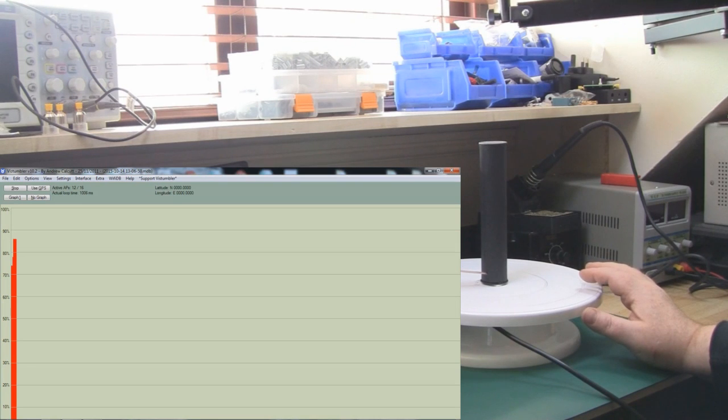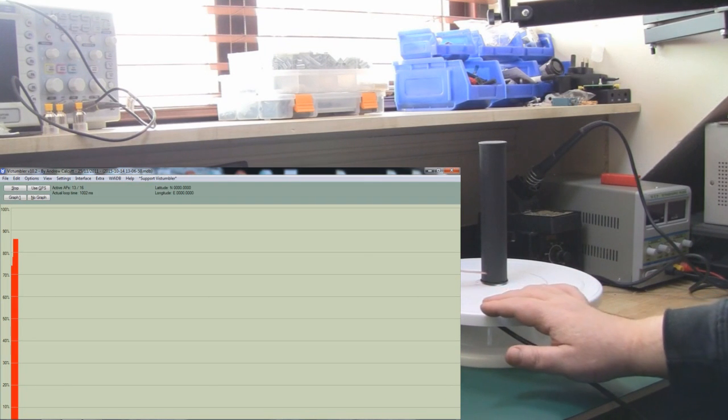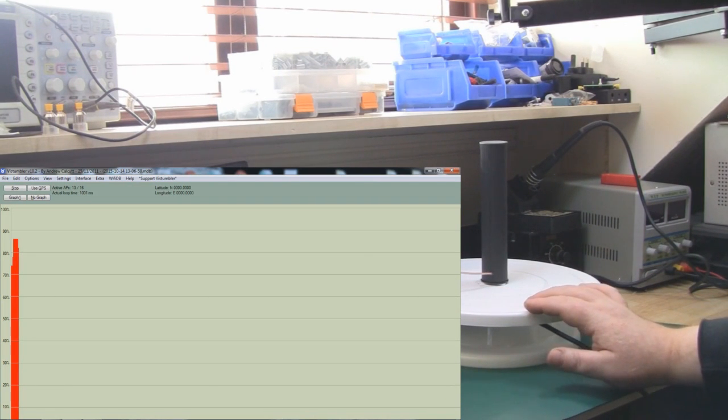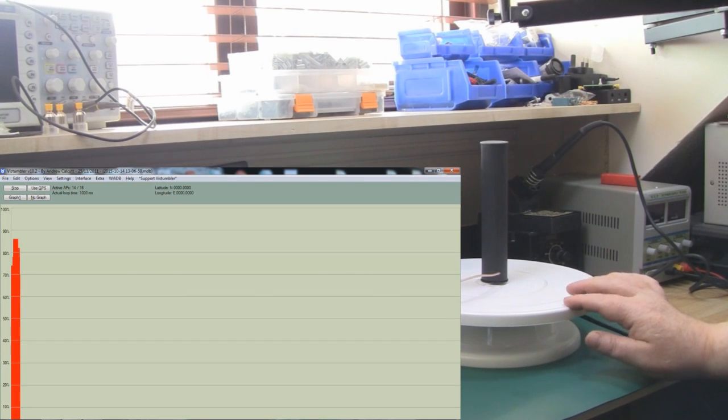Now what I'm going to do, the signal is about 86-87% there, I'm going to start turning this antenna on this turntable and hopefully you'll be able to see what the problem actually is.